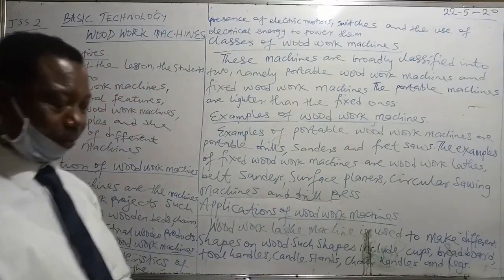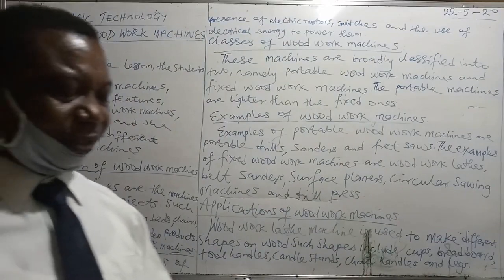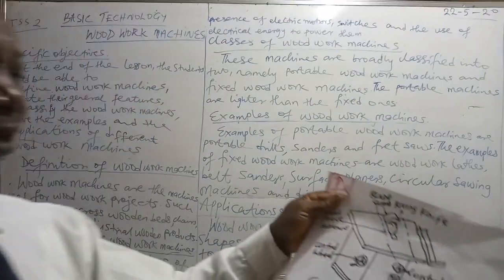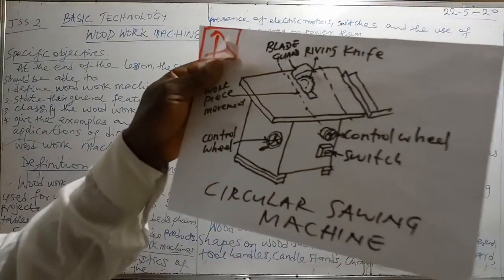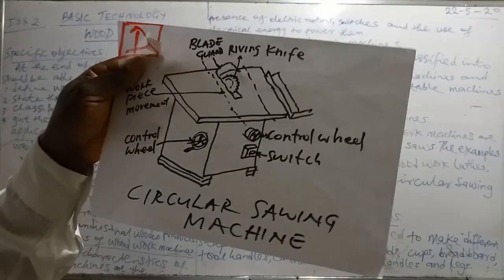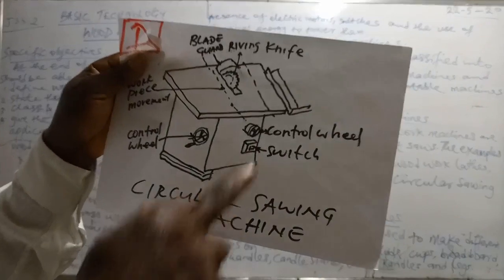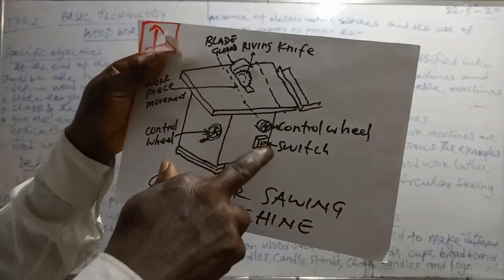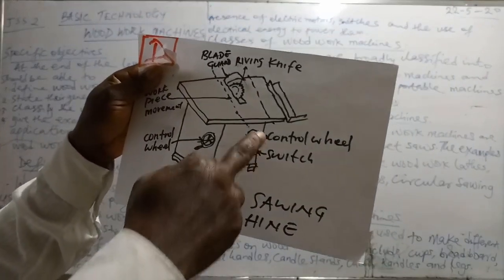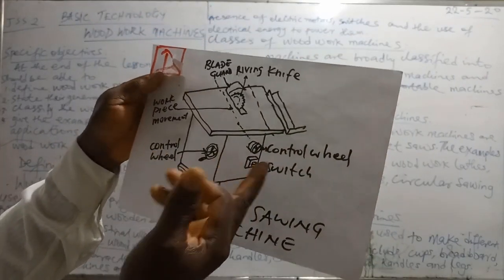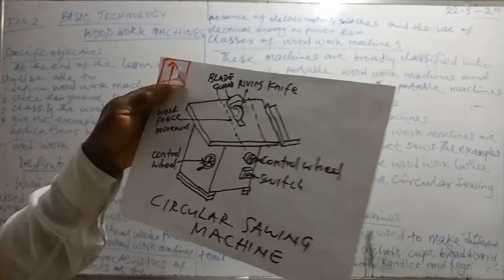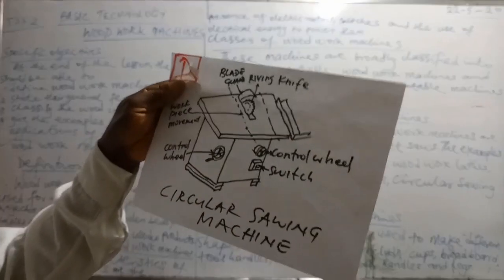Number four, we have the circular saw. And this circular saw has the switch as well as the control wheel. This control wheel is where you have the motor, like I have mentioned earlier.